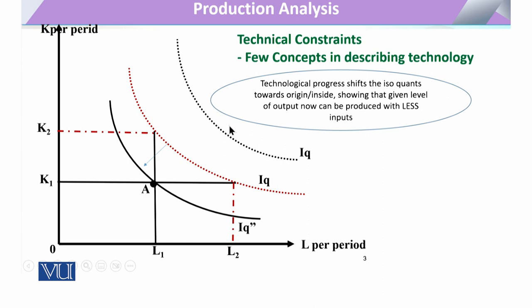Over time we can observe technical progress in daily life. A specific example is the USB drive: previously, storage capacity was only a few megabytes, but now gadgets available through technology offer 30 GB or 64 GB. Through technology, you can have a greater level of output from the same level of input, or equivalently, the same level of output with fewer inputs.